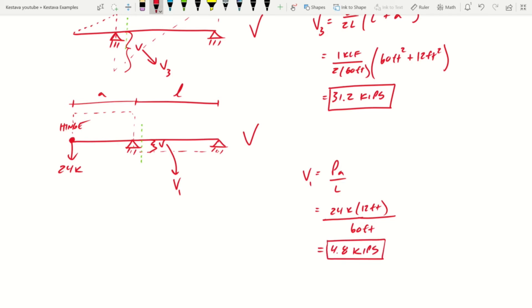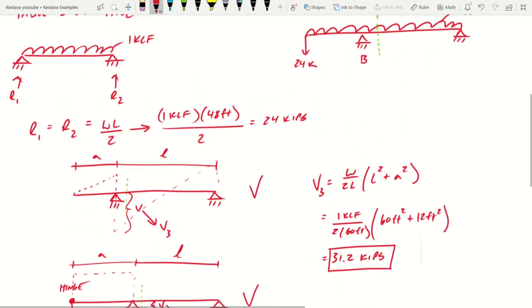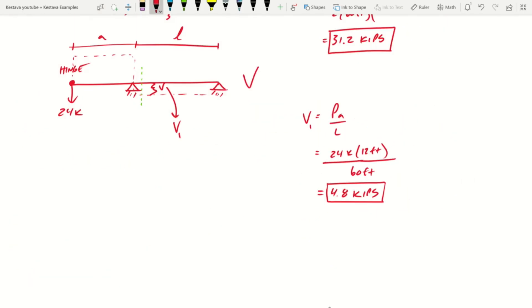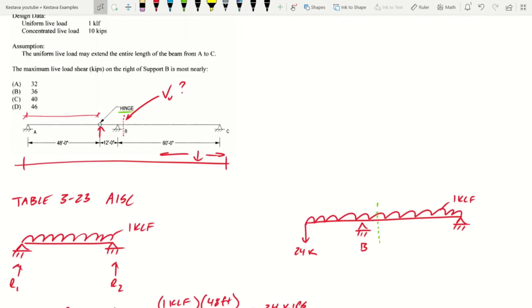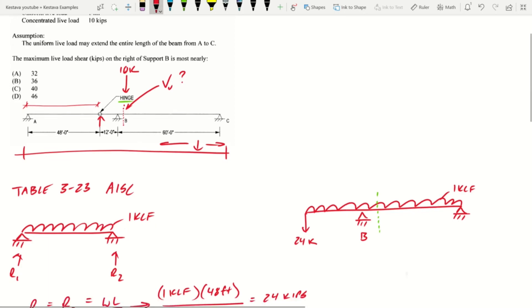So with just the distributed load across the entire AB span, we would have a shear value equal to 31.2 kips plus 4.8 kips. But we still have that moving load of 10 kips. Now, in this case, the greatest shear value that can be added from that moving load would be when that shear value is directly at the point of interest. So that's pretty straightforward.